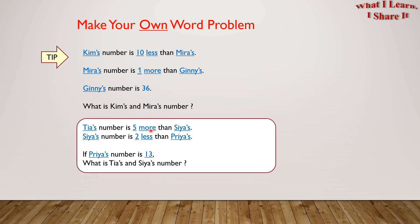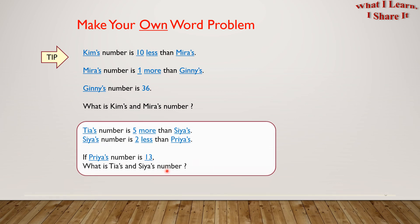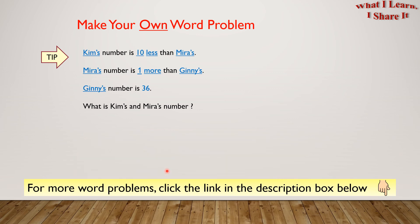Tia's number is 5 more than Sia's. Sia's number is 2 less than Priya's. If Priya's number is 13, what is Tia's and Sia's number? Isn't it exciting to make our own word problem? So go ahead and make some of your own.